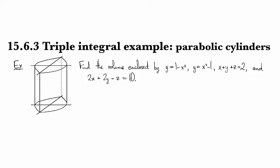So y equals 1 minus x squared and y equals x squared minus 1, and if you look right here you can see those two parabolas kind of going back to back over a copy of the plane. And then they're going to be bounded above and below by x plus y plus z equals 2 and 2x plus 2y minus z equals 10.